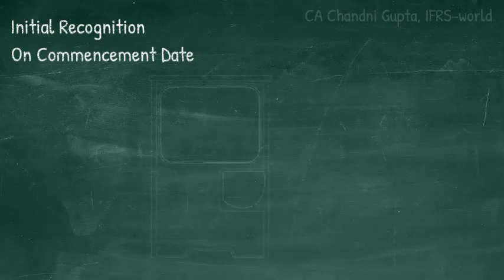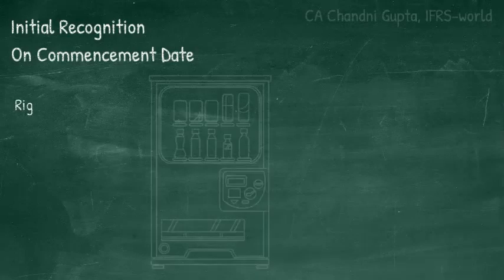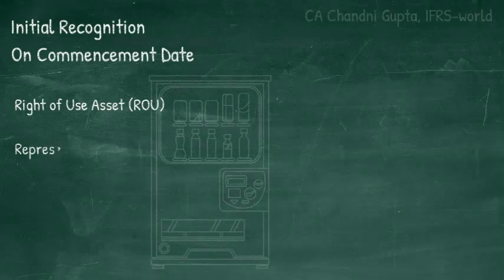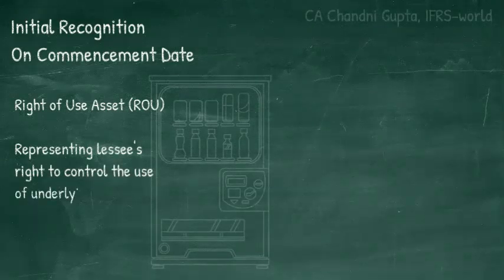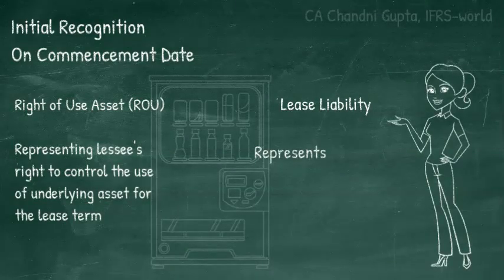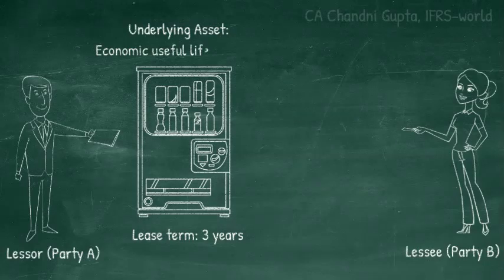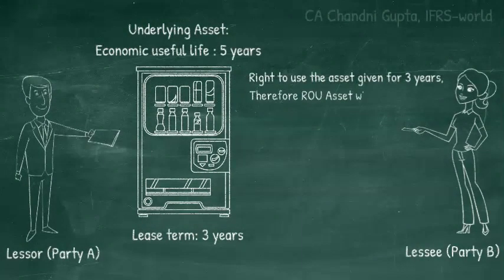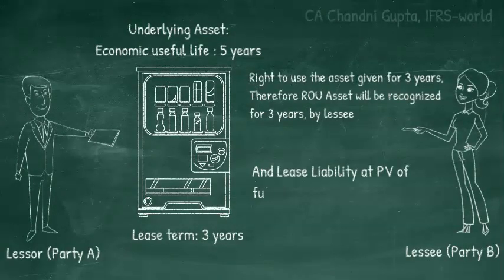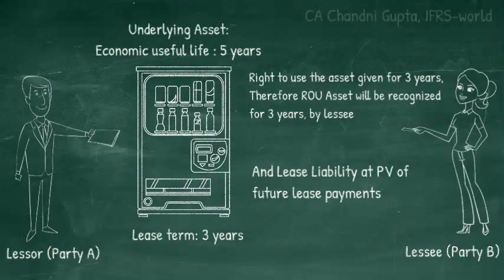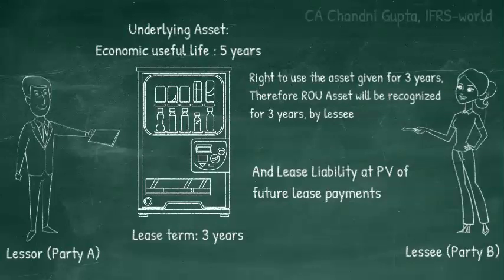On commencement date, the lessee will recognize an asset — not the underlying asset, but the right-of-use asset, in short ROU asset. The ROU asset denotes the lessee's right to control the use of the underlying asset, and is recorded for and till the lease term. Corresponding to this ROU asset, he will recognize a lease liability. In our example, Party B leases the vending machine for three years, while its economic useful life is five years. Party B will recognize an ROU asset for three years, since he has the right to use the vending machine for three years only.